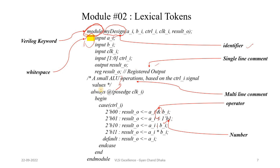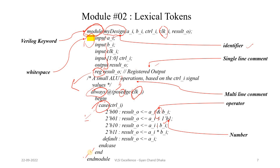If I ask you what 'always' is — always is also a Verilog keyword. 'Posedge' is a Verilog keyword. 'clk' is nothing but an input port, so it is a user-defined identifier. 'input' and 'output' are Verilog keywords. 'reg' is a Verilog keyword. 'case' is a Verilog keyword. 'endmodule' is also a Verilog keyword. So whatever word you see in this file is one of the lexical tokens we have discussed so far.